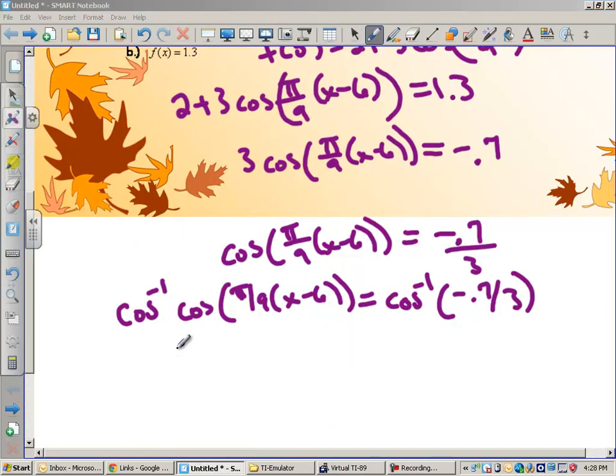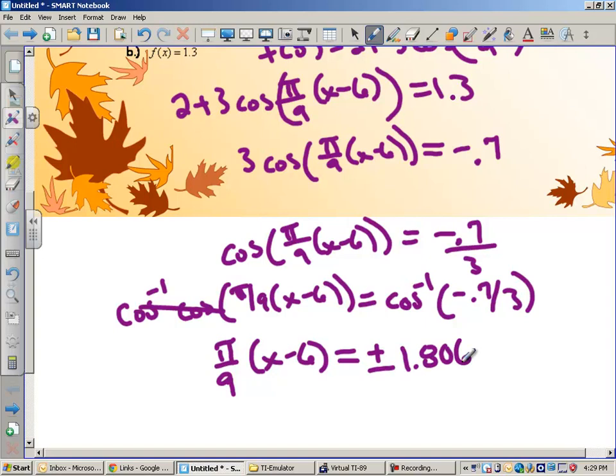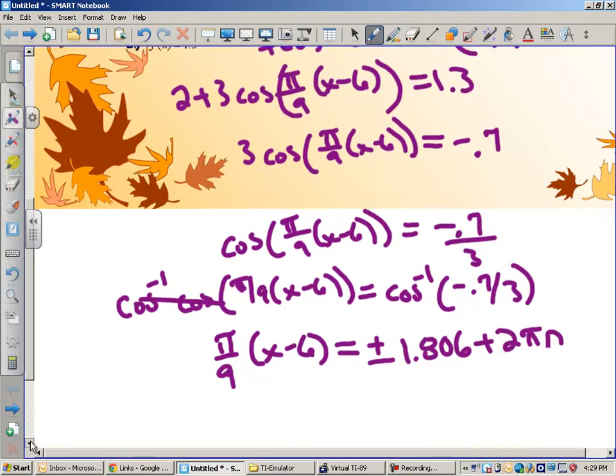Now, what's the arc cosine of cosine? Well, we should learn from inverse functions. As long as this is in the domain of arc cosine, then these cancel each other. And I have pi over 9 times x minus 6 is equal to plus or minus 1.806 plus 2 pi n. Now, where did you get this plus or minus stuff from? If you go back and re-watch your general solutions video, whenever we do arc cosine, for general solutions, we add 360 n or 2 pi n since we're working in radians. And then we also do the negative of that number.